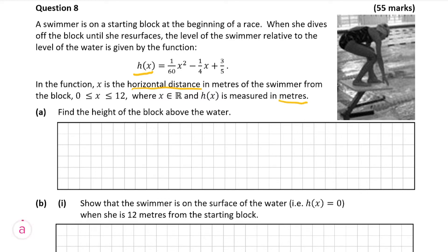In part A, we're being asked to find the height of the block above the water. We know that the function h of x tells us how far away the swimmer is from the water level, with x being the horizontal distance from the swimmer to the block. To find the distance from the block to the water, we must calculate the distance from the swimmer to the water when the swimmer is standing on the block. We know that the swimmer is 0 meters from the block when she is standing on it.